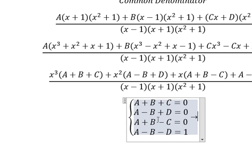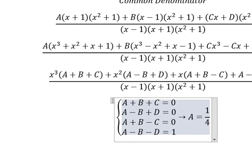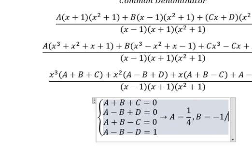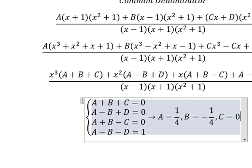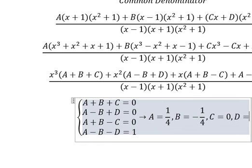Now we need to find the solutions of A, B, C, D. So A equals to 1 over 4, B equals to negative 1 over 4, C equals to number 0, D equals to negative 1 over 2.